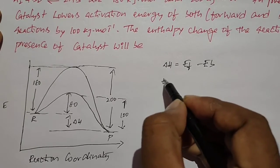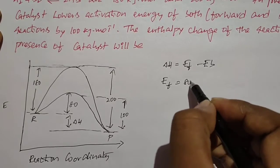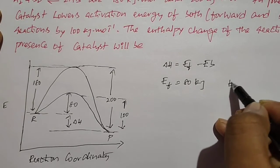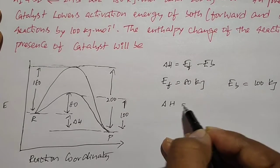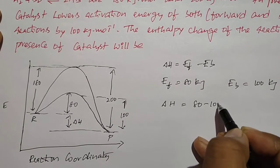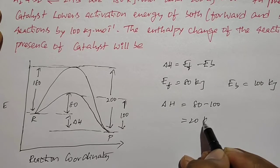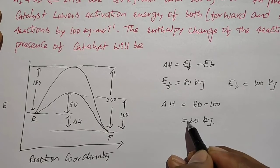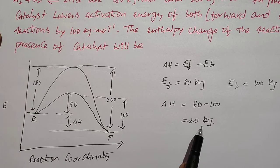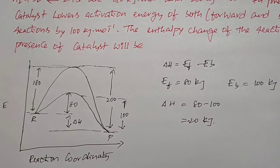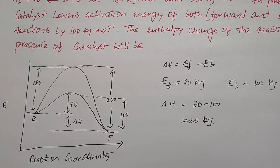Here Ef = 80 kilojoules and Eb = 100 kilojoules. Then ΔH = 80 − 100 = −20 kilojoules. So the change in enthalpy of the reaction in the presence of catalyst is −20 kilojoules. Actually, the catalyst cannot change the enthalpy, so in the presence of catalyst or in the absence of catalyst, we get the same value.